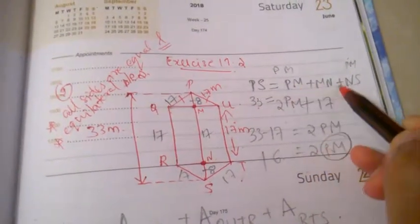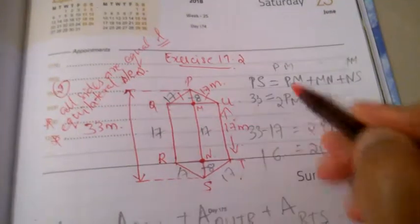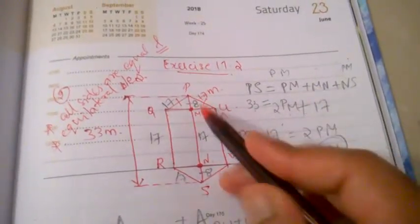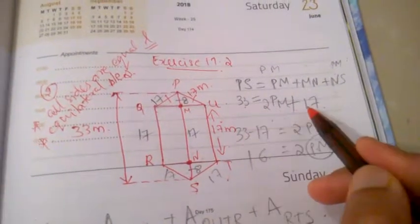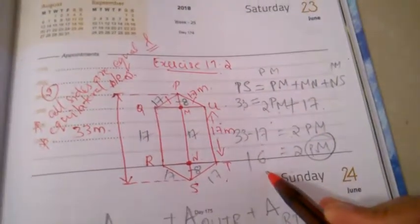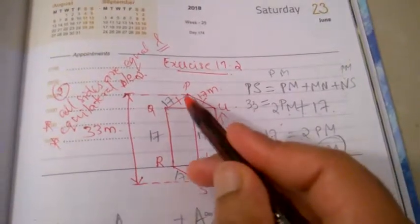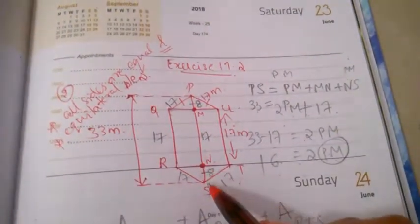So PS is 33 equals PM, and NS are of equal height, so I can write 2PM plus MN is given as 17. So 33 minus 17 is 2PM. That is 16 equals 2PM, so I get PM as 16 divided by 2, which is 8. So I'm getting the height of the triangles PM and NS is 8.